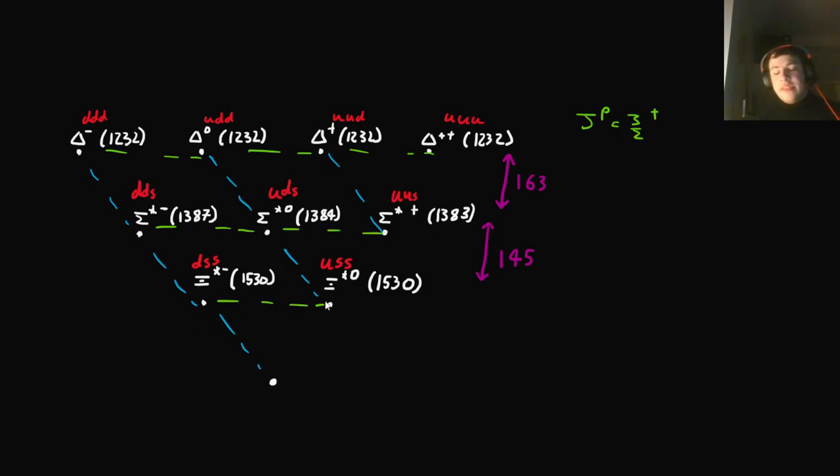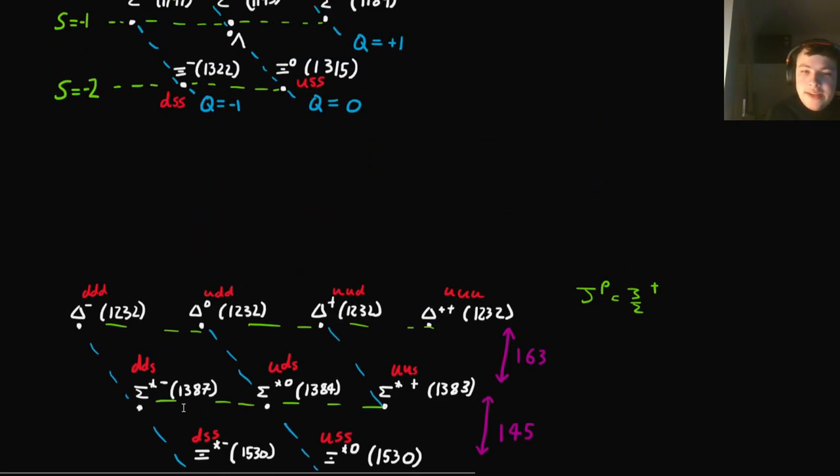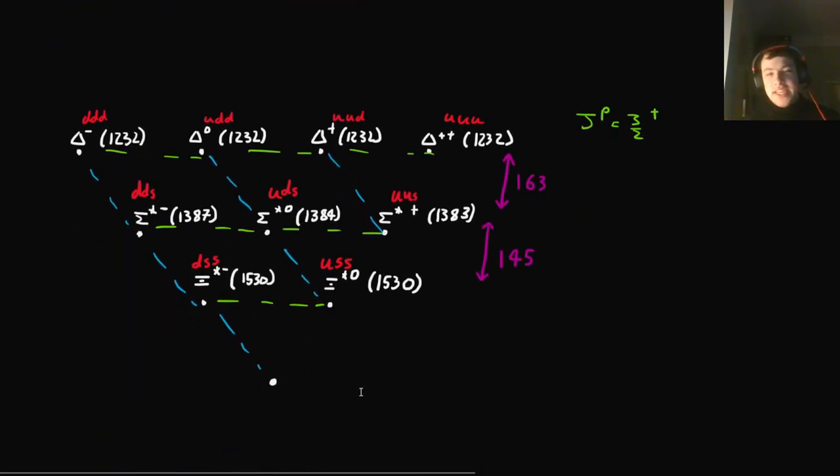Now, this has a missing spot. I mean, you can't really see it if I hadn't drawn it in, because you think, well, maybe it's just a tetrahedron. Because why did we have a hexagon here and not continue it out to be a kite? Right. And it's to do with representation theory.